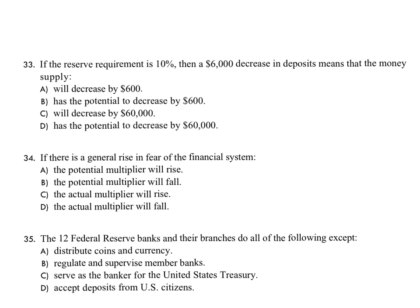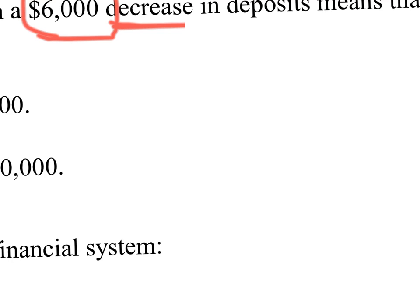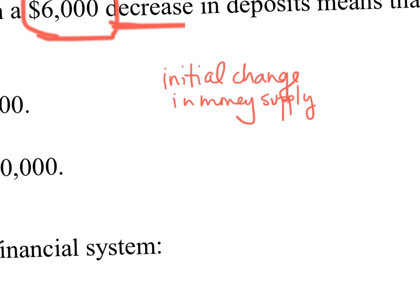The last problem gives us the unified equation we can use for everything — the biggest application of the money multiplier. If the reserve requirement is 10%, what happens when you remove $6,000 from deposits in the banking system? The money multiplier can work in positive and negative ways: injecting money into new deposits expands the money supply, while reducing deposits shrinks it by a bigger multiple than the initial change.